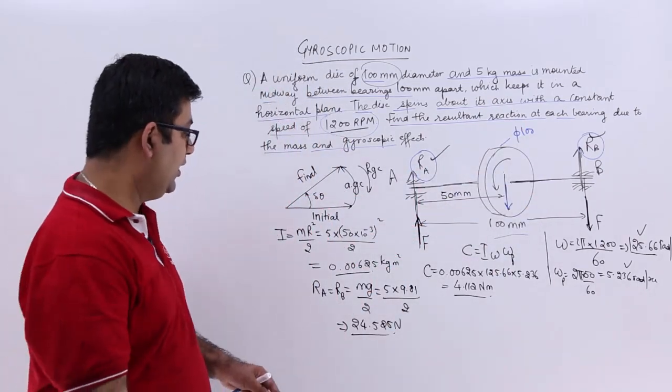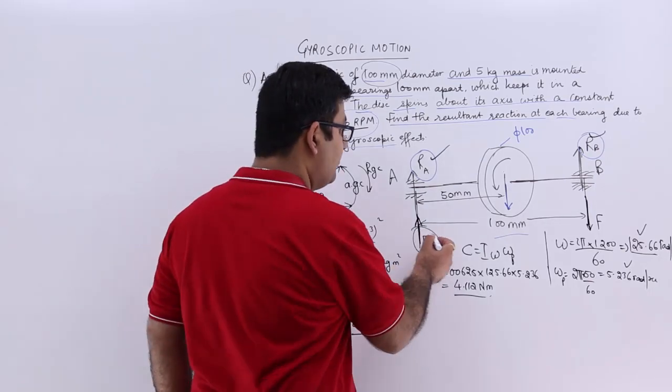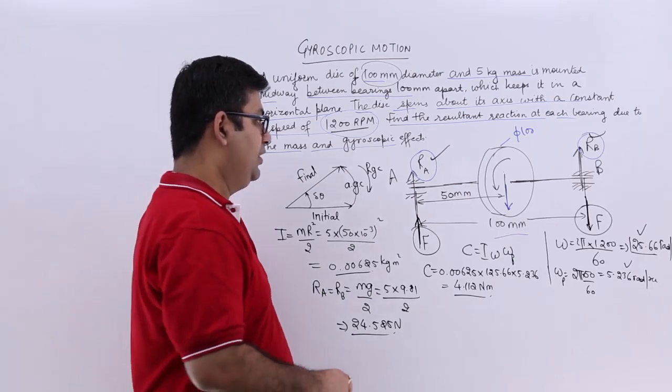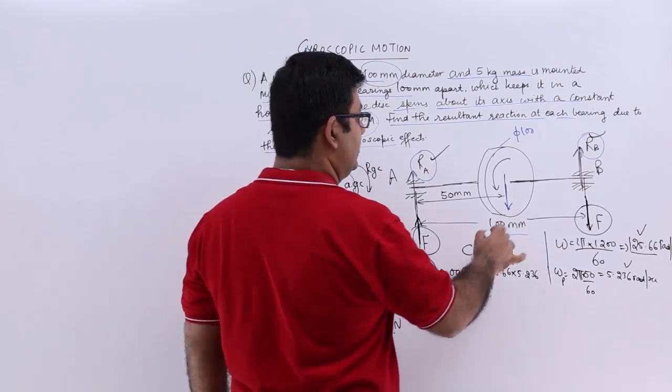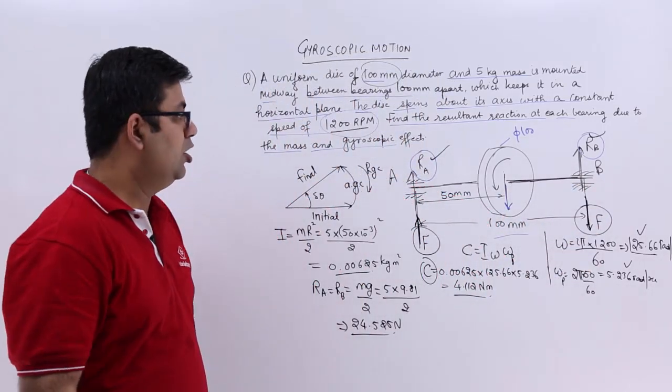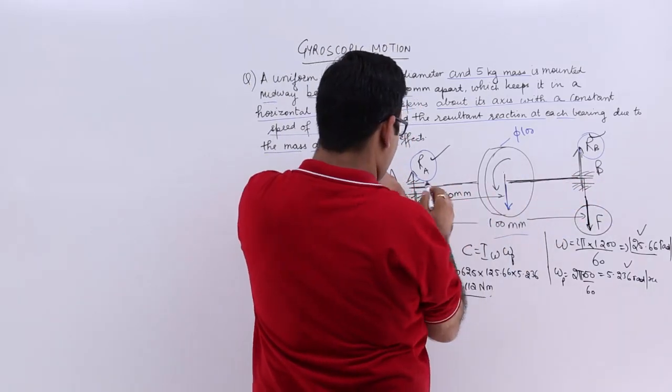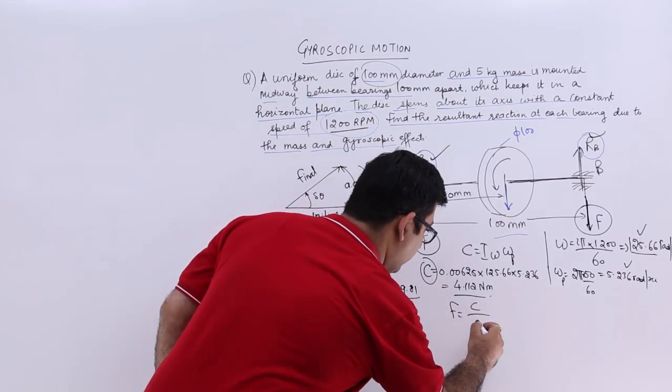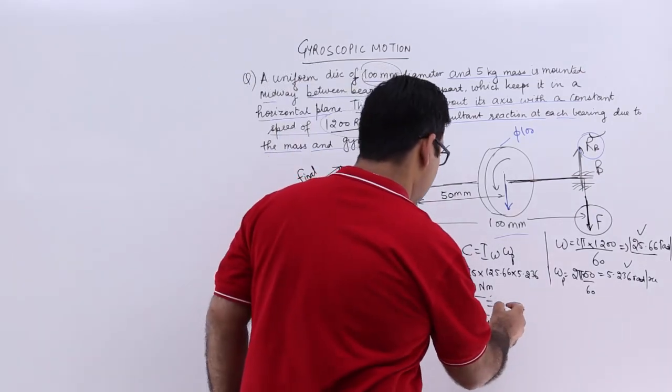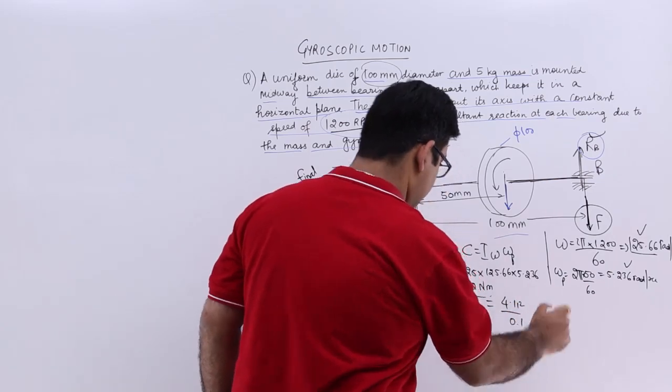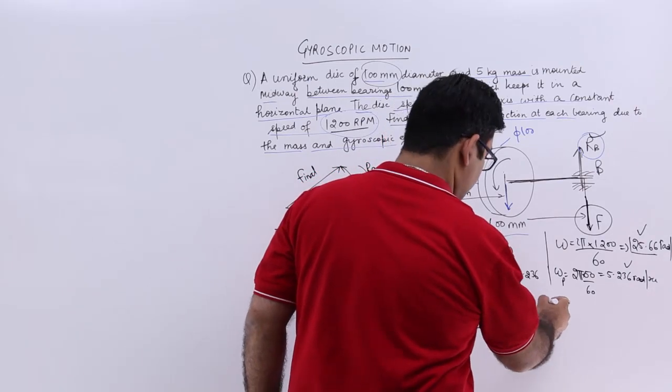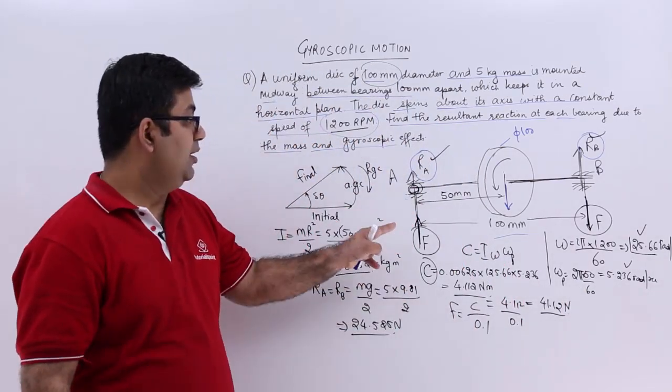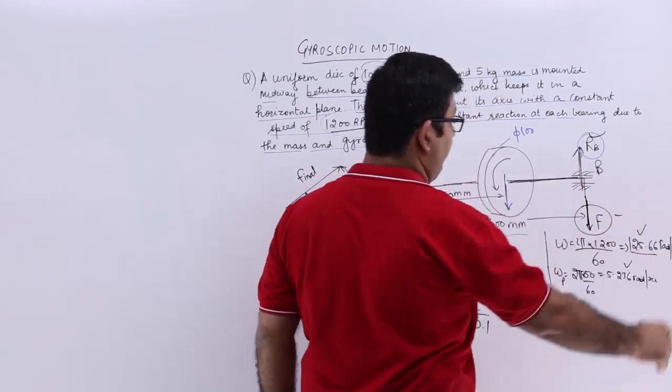Now if we find out this F, then we will be able to find out the total reactions at these two bearings. F is the couple divided by the distance. So your F would be couple / 0.1, that would be 4.112 / 0.1, that would be 41.12 newtons. This is your F on A. This F is positive, and on B this F is negative because that is in the downward direction due to this reactive gyroscopic couple.